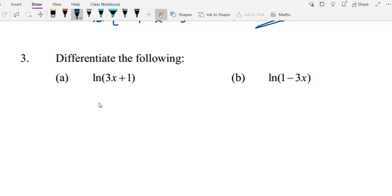This is question 3: differentiate the following. To differentiate the function ln(3x+1), since there is no symbol to represent this function, we will write our first derivative in this form: d/dx of ln(3x+1), which means differentiate ln(3x+1) with respect to x.